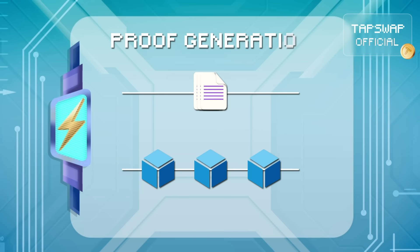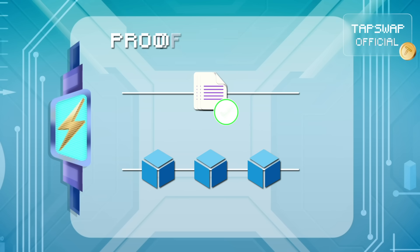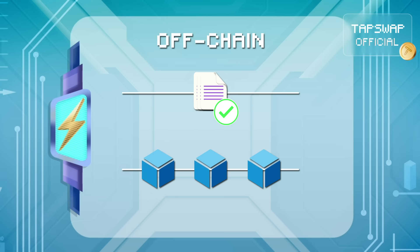It's time for proof generation. For each transaction batch, a validity proof — which mathematically confirms that all transactions were valid — is created off-chain.